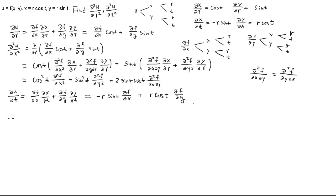When we take the second-order derivative with respect to t, there is a slightly different situation. In the previous calculation for ∂²u/∂r², sin(t) and cos(t) were treated as constants. But here, since we are differentiating with respect to t, sin(t) and cos(t) are no longer constants. Only r is constant. We therefore have two products and must apply the product rule.